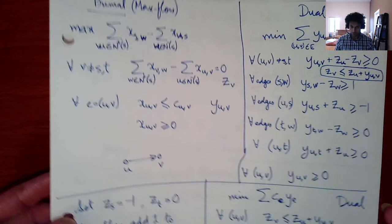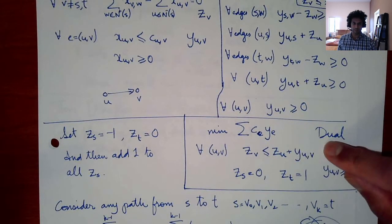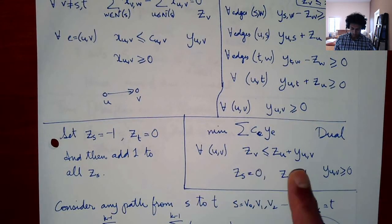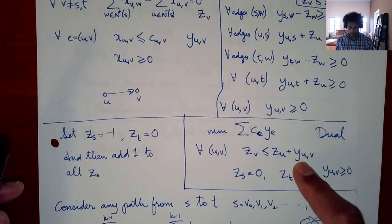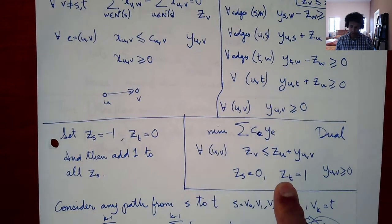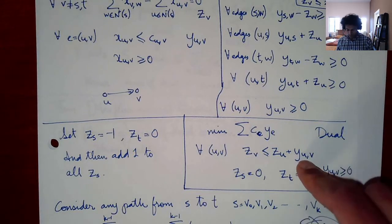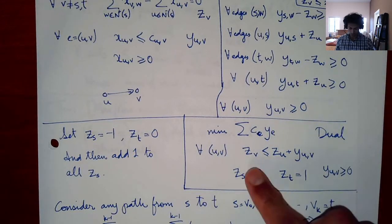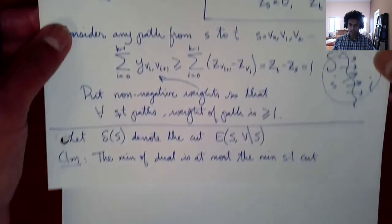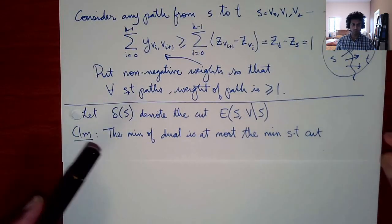The dual has distance labels. The Z variables are the distances while the Y_uv are weights. The dual says the distance from s to itself is 0, the distance to t is 1, and you need non-negative weights so that the Z's satisfy a distance property. What we proved last time was that the min of the dual is at most the min ST cut.